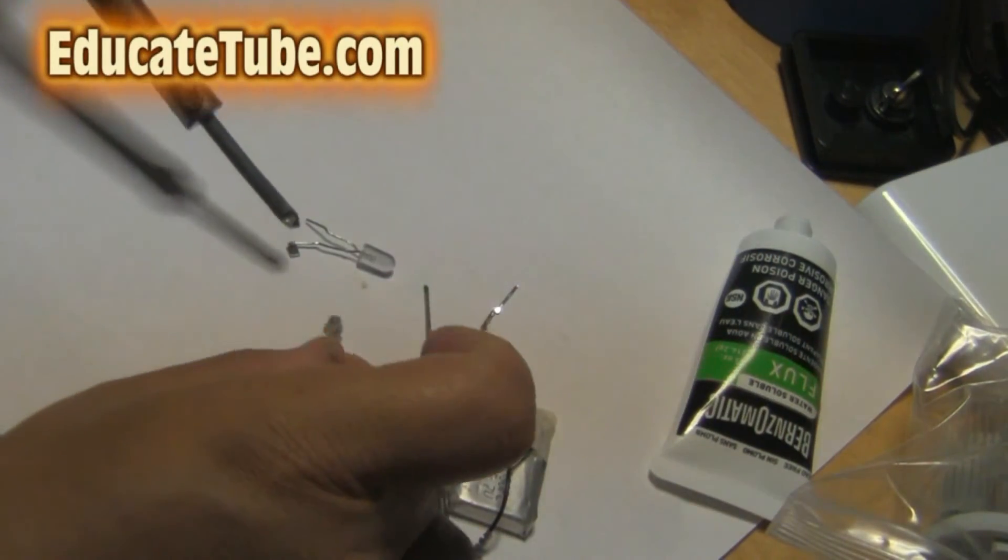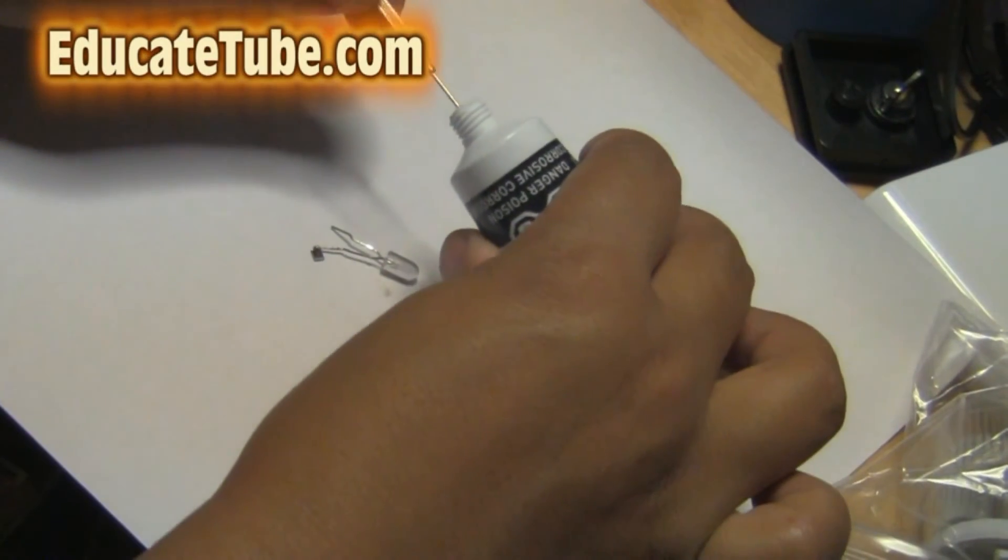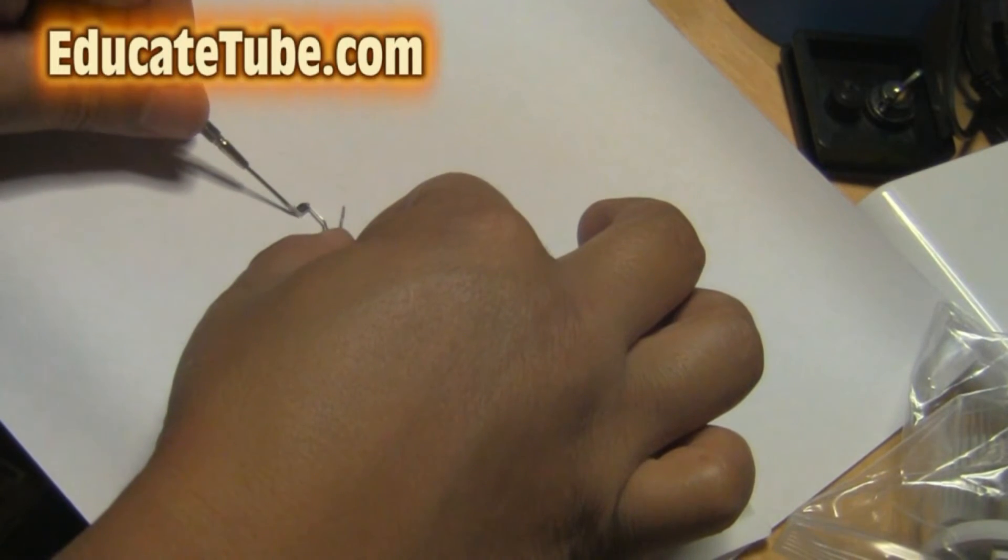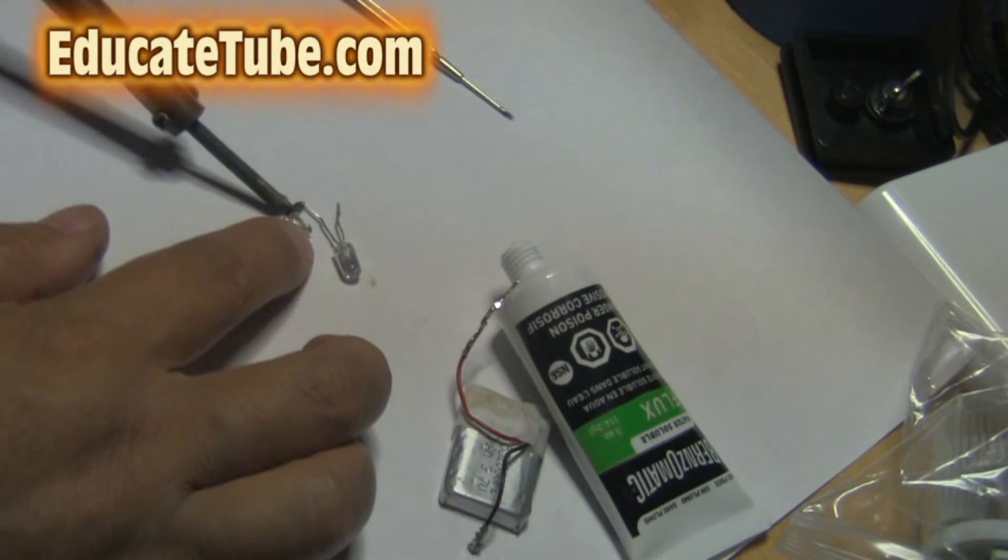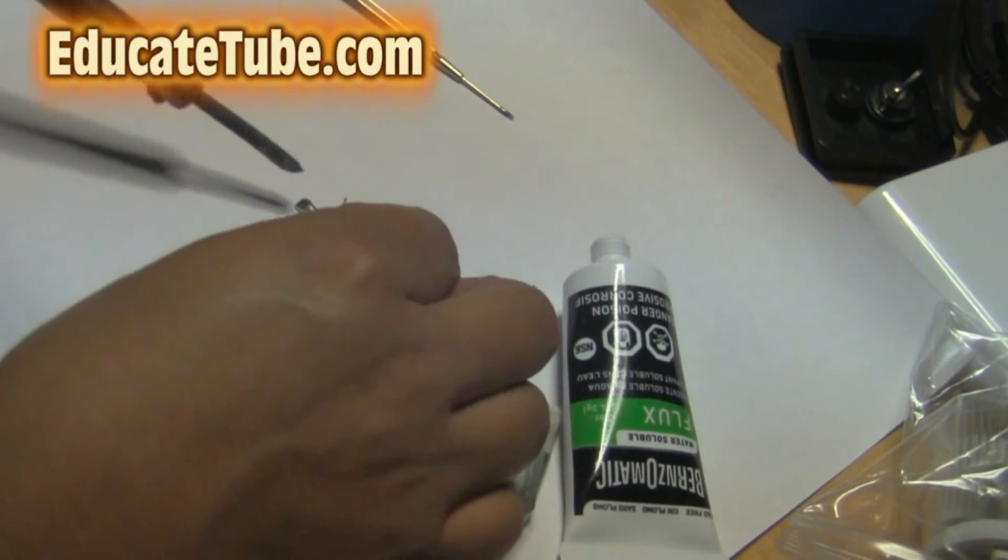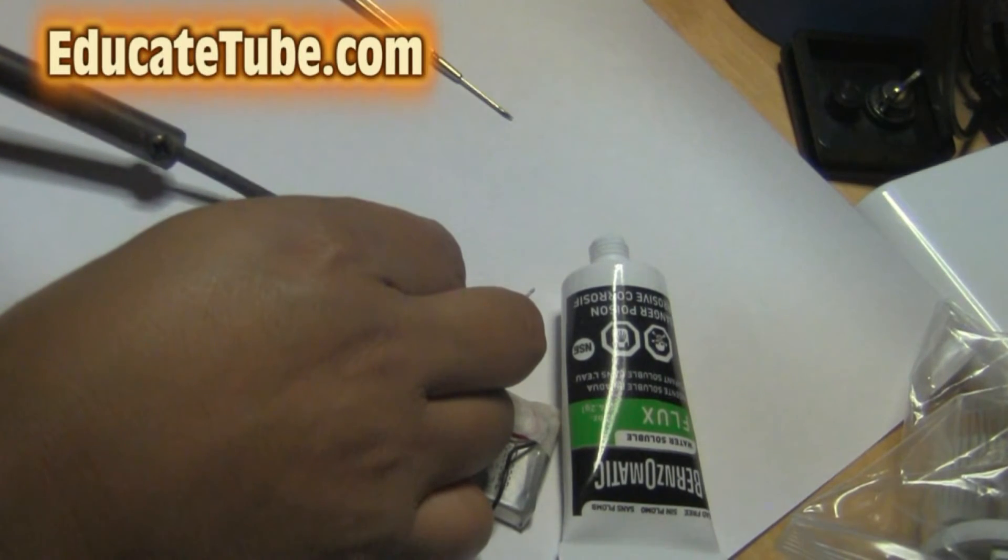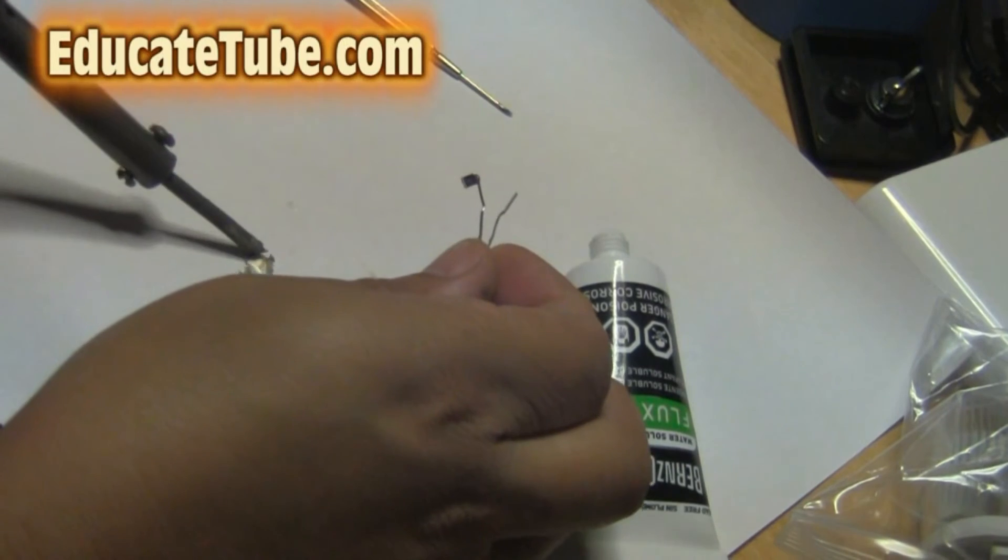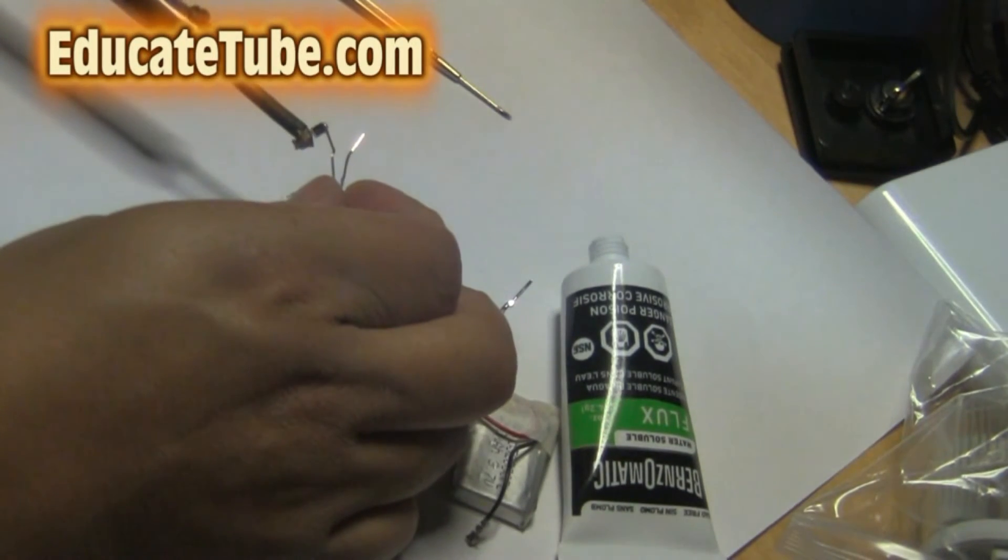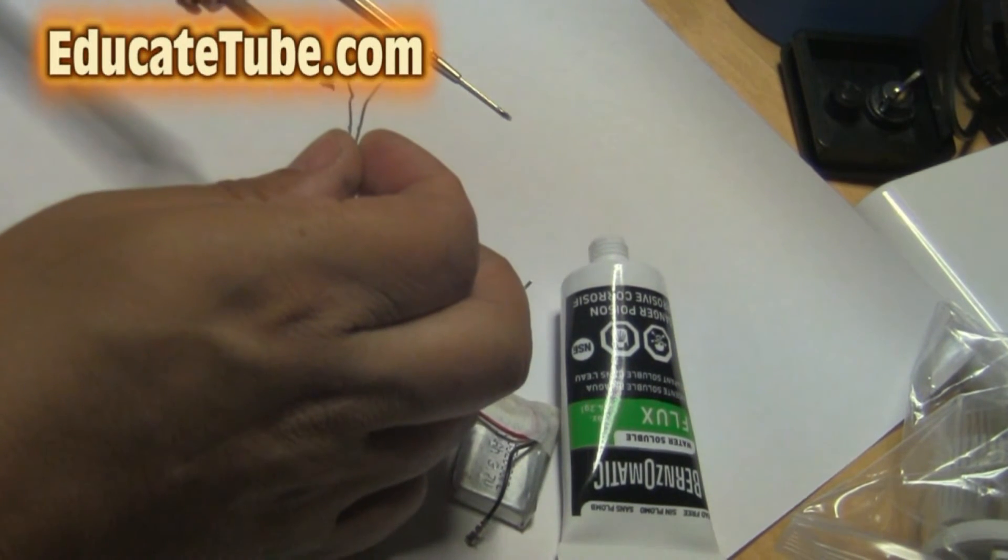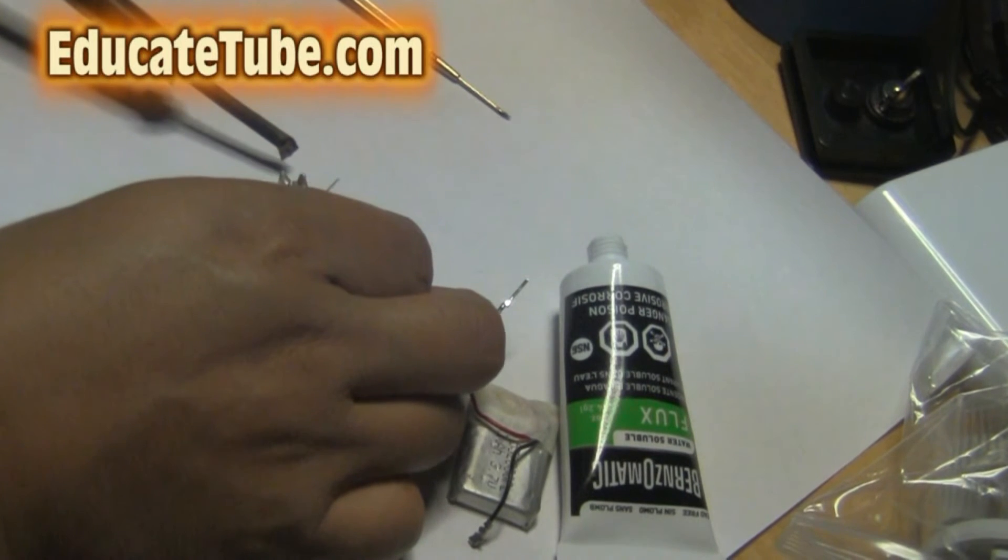And like I said, I might want to add a bit more flux on this side. I applied it on here, I'm going to put the soldering component to the other end. Give it a lot of metal here. Add some flux, and then... There we go.